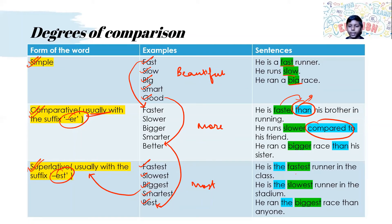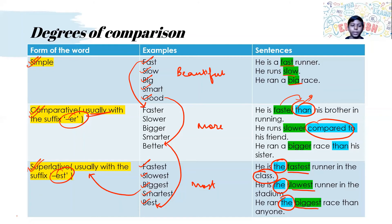Example sentences using the superlative: 'He is the fastest runner in the class' — he is compared with the whole class. The article the comes before the superlative, which we will learn in the articles section. 'He is the slowest runner in the stadium.' 'He ran the biggest race than anyone.'